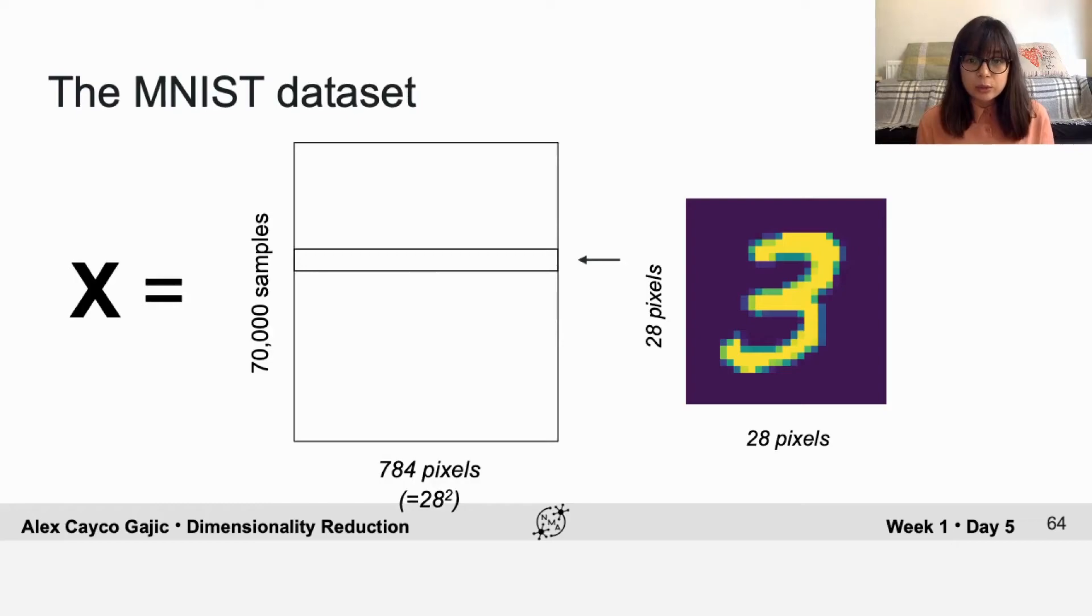To build the data matrix, we can just unravel the 28 by 28 pixel image into a very long 784 pixel length row vector, and then we stack the vectors for different samples as usual. So now it's your turn to apply PCA to MNIST and try to infer the intrinsic dimensionality.